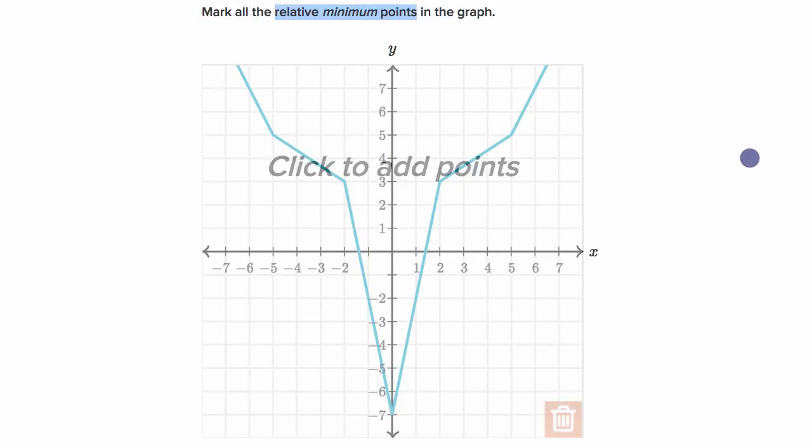Well, a relative minimum point is a point of the graph where if we were to look at the values of the graph around it, they're all going to be the same or higher.